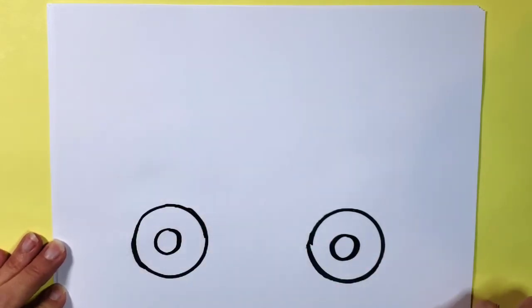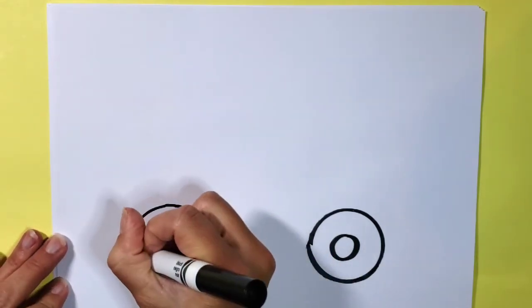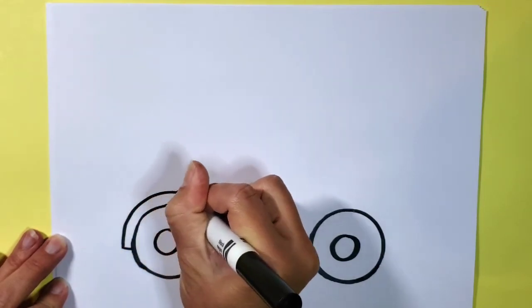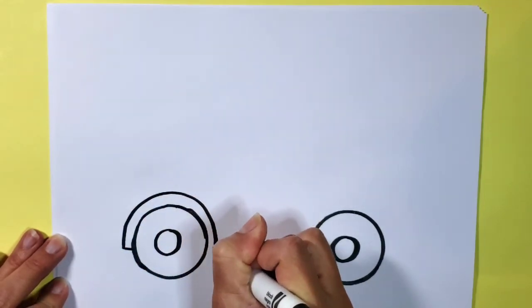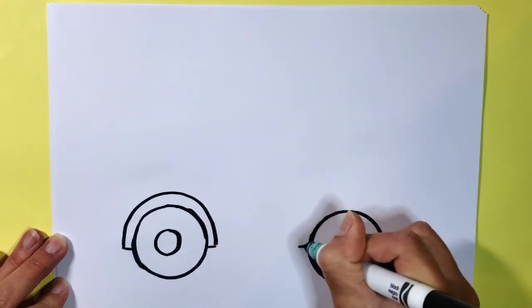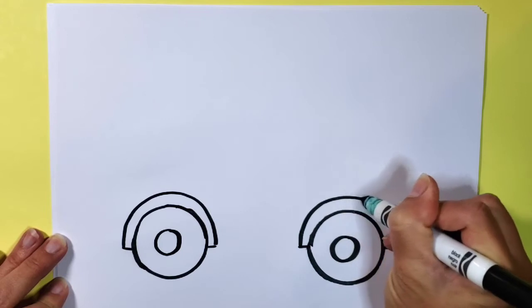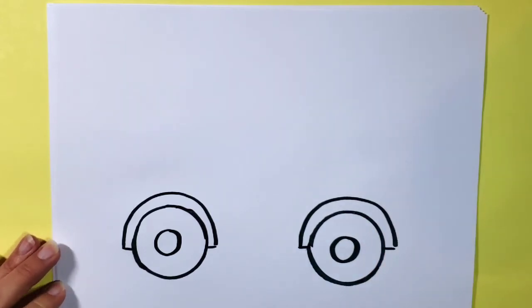I'm going to go ahead and give the wheels some little hubcaps. This is kind of going to be more of a cartoony looking bus but should be fun. I'm going to just make a little line on the side of each of the wheels like that and then you can connect it with another line that goes around the same shape as the wheels.